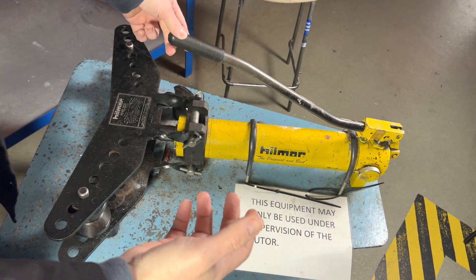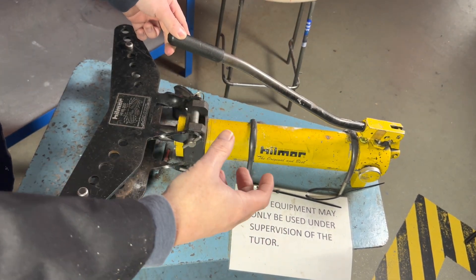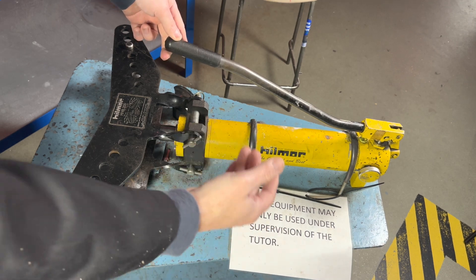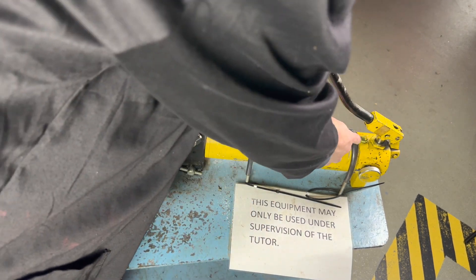To bend low carbon steel pipe you need a lot of force, so to make it easier we use a hydraulic pipe bender which has oil inside.